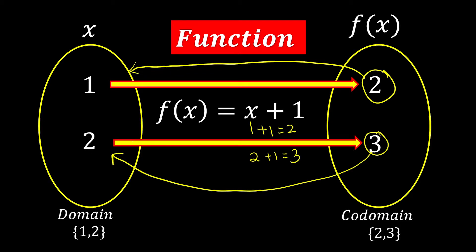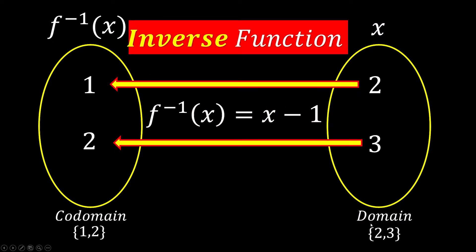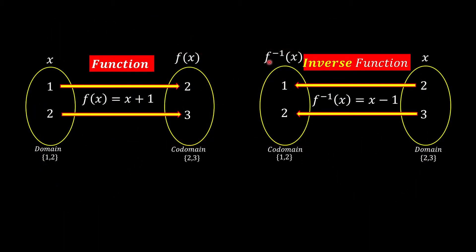To find the inverse, we reverse everything. The co-domain now becomes the domain. Putting these two diagrams side by side: the domain {1, 2} becomes the co-domain of the inverse function, and the co-domain {2, 3} becomes the domain of the inverse function. The arrows are reversed, and importantly, the equation is also changing.